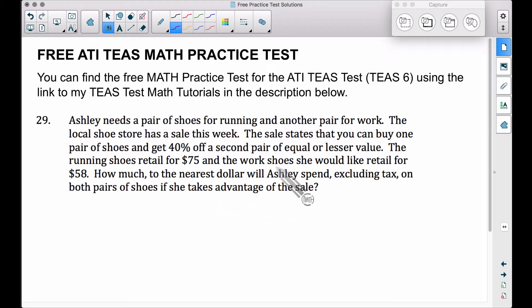So what's key here is this: you buy one pair of shoes and you get 40% off a second pair of equal or lesser value. So she has to pay full retail for the most expensive pair of shoes, the $75. So automatically she's going to pay $75 plus something else.